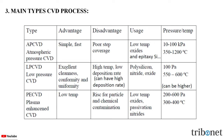Low pressure CVD offers excellent cleanliness, conformity, and uniformity. The disadvantage is high temperature operation and a low deposition rate, although high deposition rates can also be achieved. Polysilicon, nitride, and oxide are deposited using this process. The operating pressure and temperature is around 100 Pascals and 550 to 600 degrees Celsius, though it can be higher.